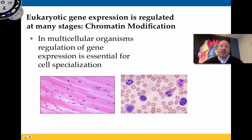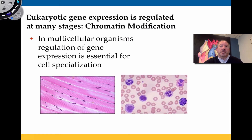Gene expression — in other words, how transcription and translation are going to be regulated — occurs in many profound ways. This particular video looks at chromatin modification. The conversation revolves around a simple question: from one cell, the zygote, how are we able to develop into striated muscle cells, red blood cells, white blood cells, chondrocytes, osteoblasts, and fibroblasts?